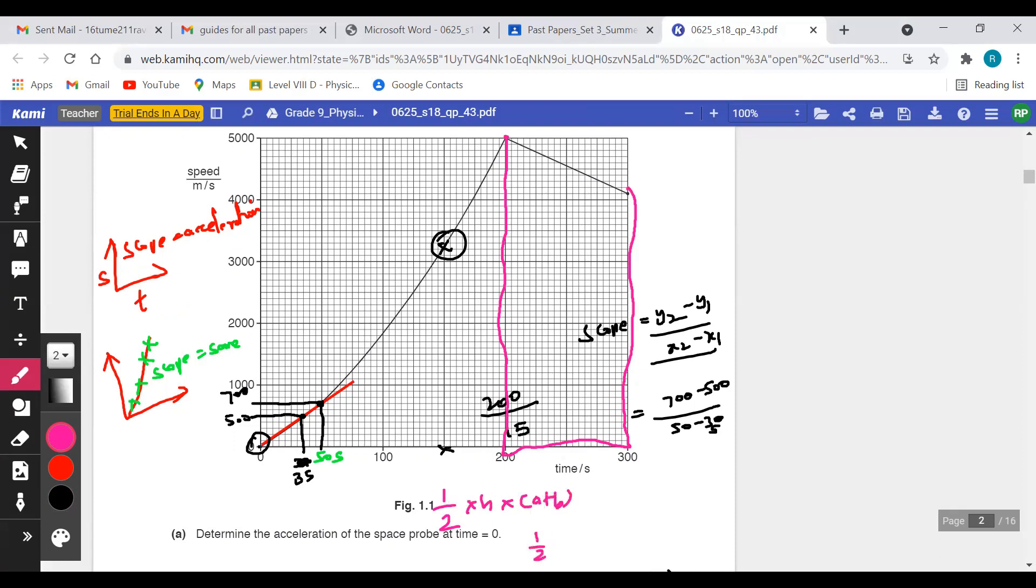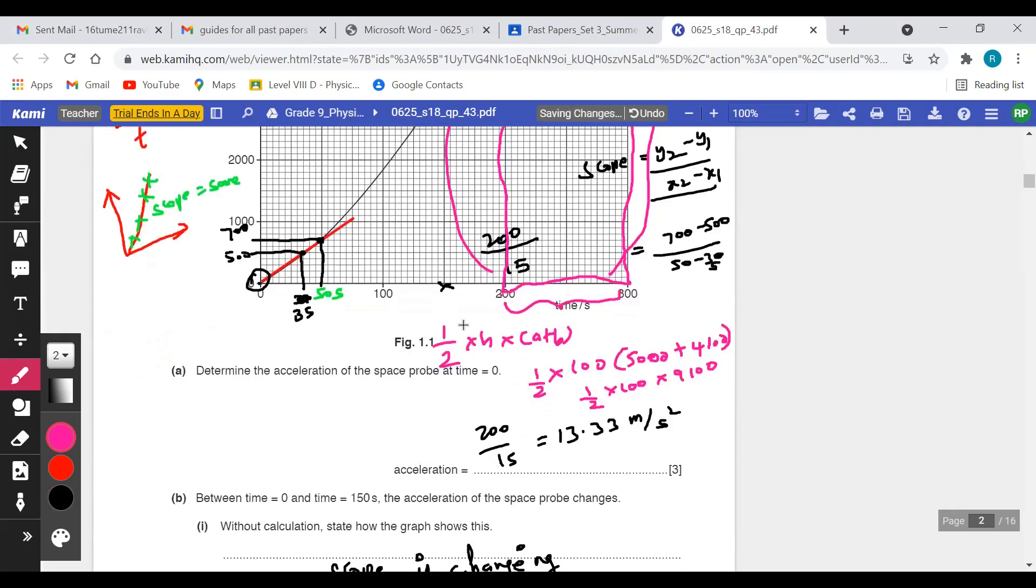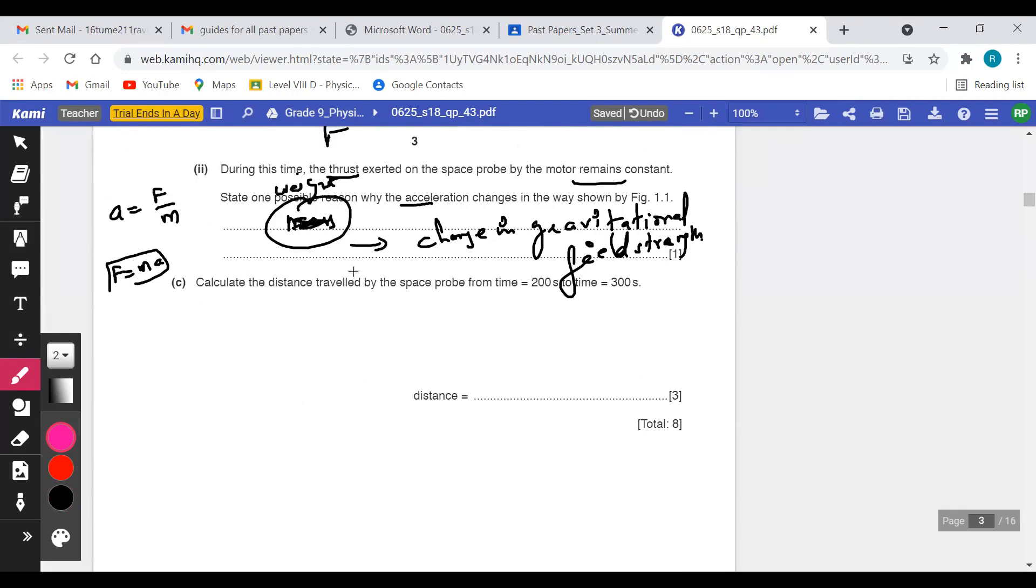So 1 by 2 into - what is height? Obviously this vertical line represents height: 100. Sum of parallel sides: these two lines represent parallel sides. So this one will be 5000 plus this one will be 4100. It will be 1 by 2 into 100 into 9100, which equals 4.55 times 10 power 5.